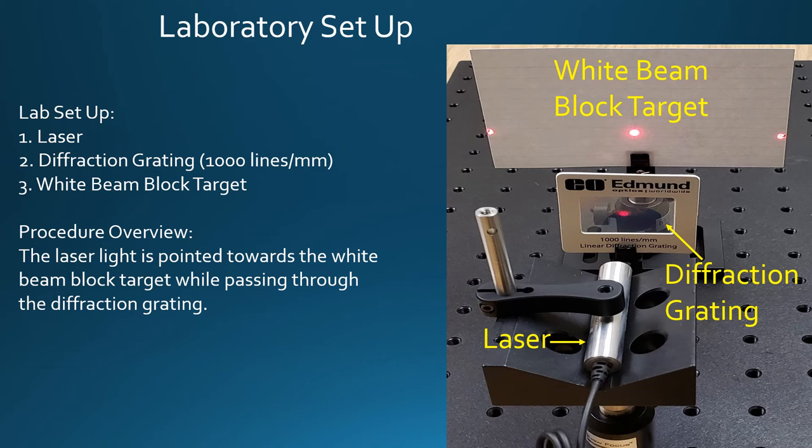This picture shows the laboratory setup, including the laser, diffraction grating, and the white beam block target, which in this case is a white 3x5 note card. The card serves as a target for the laser light while blocking the light from passing. From this point on, it will be simply referred to as the target.